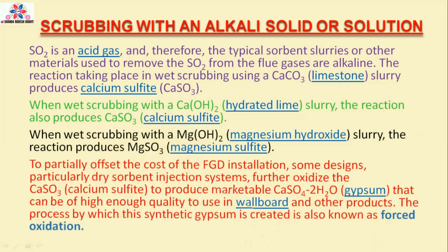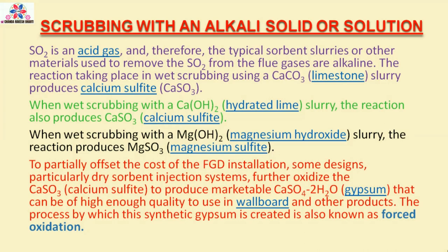To partially offset the cost of the FGD installation, some designs — particularly dry sorbent injection systems — further oxidize the CaCO3 to produce marketable CaSO4·2H2O (gypsum) that can be of high enough quality to use in wallboard and other products. The process by which this synthetic gypsum is created is also known as forced oxidation.